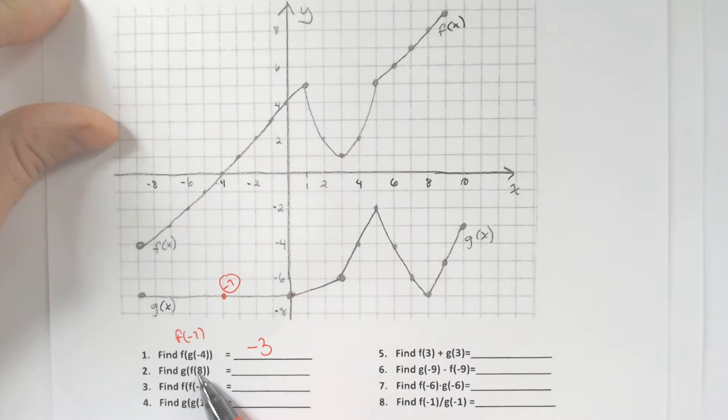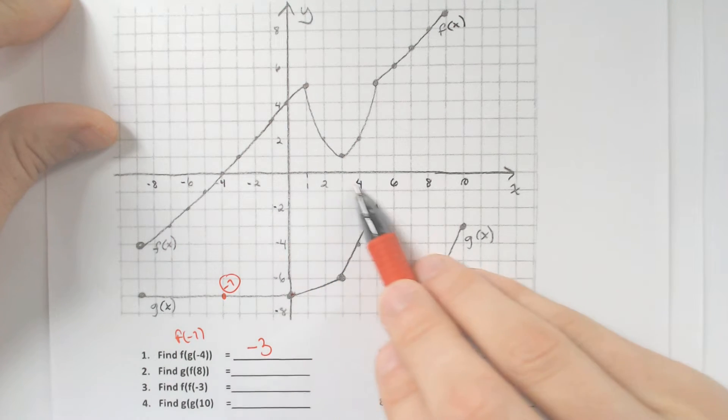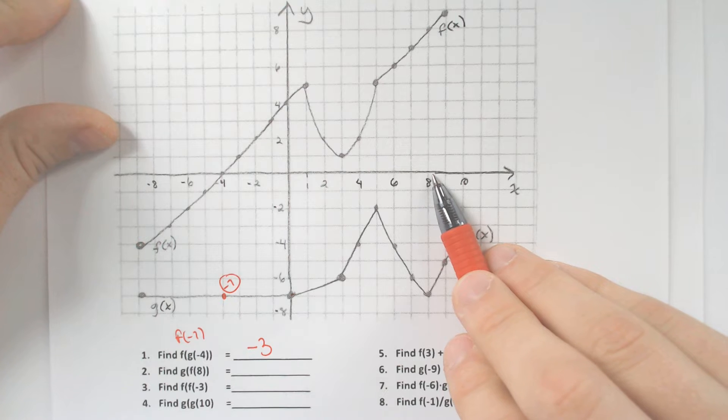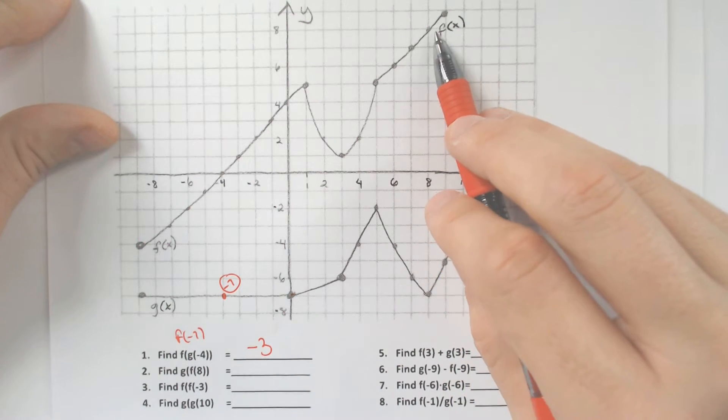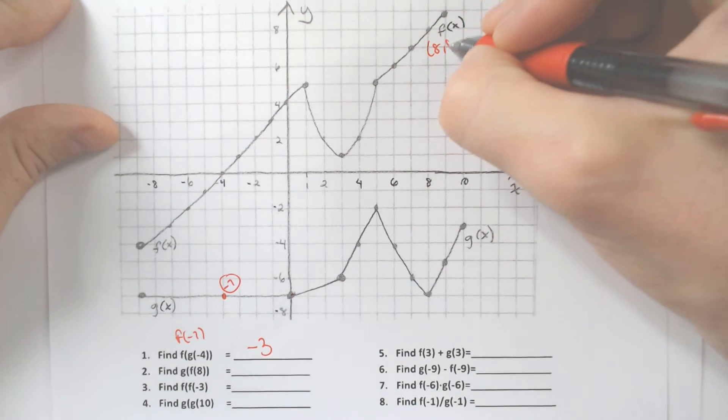Number 2, f of 8. If we have to do f of 8, we would have to go to the 8 on the x value, then to the f of x function, which also, I believe, that is at 8.